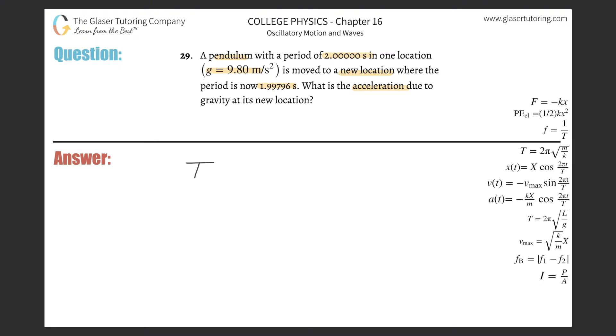So here we have the period formula for a pendulum. Period of a pendulum will equal 2π multiplied by the square root of the length of the pendulum divided by g.